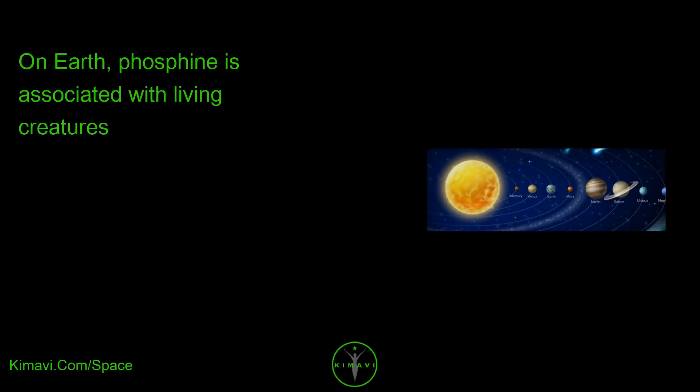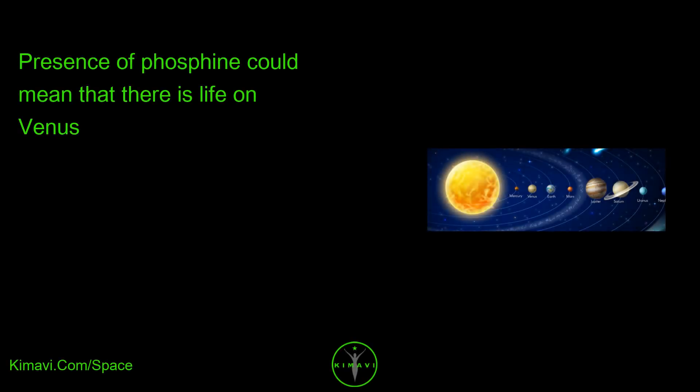On Earth, phosphine is associated with living creatures. Presence of phosphine could mean that there is life on Venus.